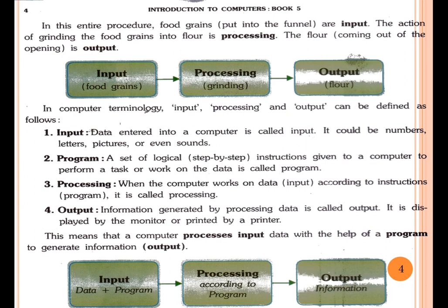In computer terminology, input, processing, and output can be defined as follows. First: input — data entered into the computer is called input. It could be numbers, letters, pictures, or even sounds. Any data — jaysay aapka sound ho gaya, pictures ho gaya, letters ho gaya, numbers bhi ho sakte hain — agar yeh saari chizein aapne computer ke andar feed ki hain through keyboard ya phir mouse ka use karke, that is your input. A set of logical, step-by-step instructions given to the computer to perform a task or work on the data is called a program.